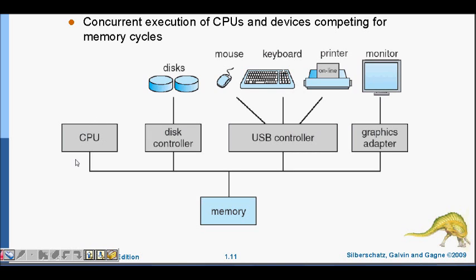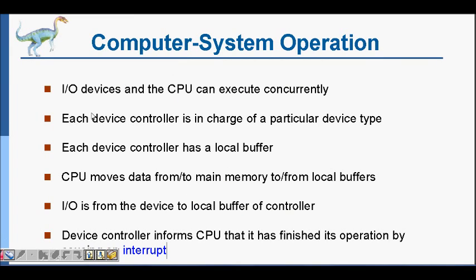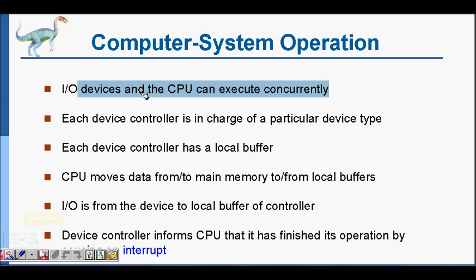In computer system operations, input/output devices and the CPU can execute concurrently. Your CPU can execute, and your input/output devices also have their own execution — they can also run code. Because we want the computer system to be efficient, we allow both of them to work concurrently.